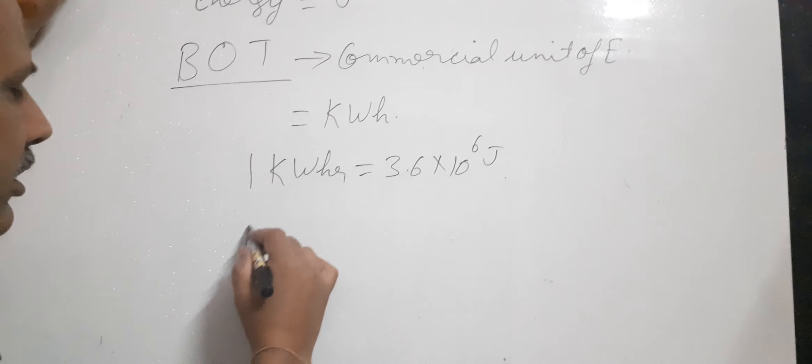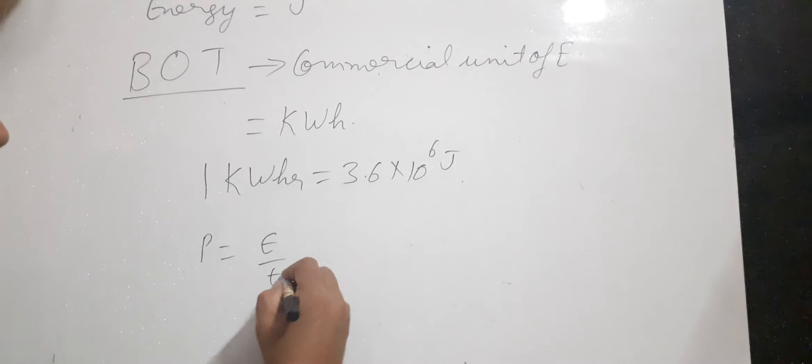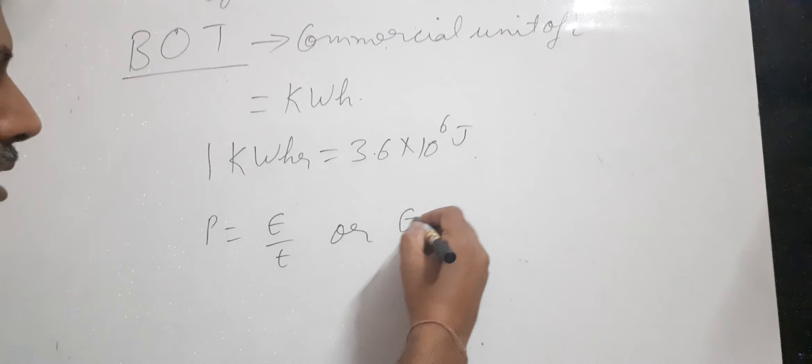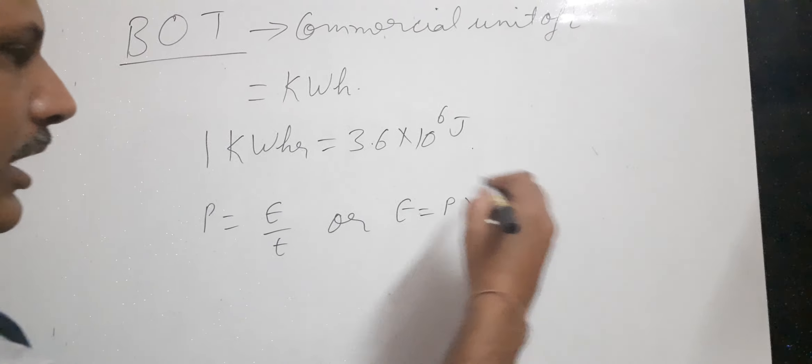One unit of energy equals 1 kWh. You know that power equals energy supplied upon time taken. If you reverse this, then energy equals power times time.